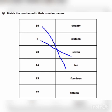Then twenty. We match twenty with its number name. Twenty is spelled T-W-E-N-T-Y.